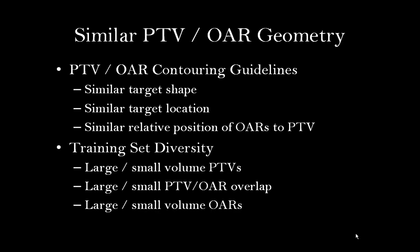In addition, patients included in the training set should be representative of all types of geometry that the model will be used for. For example, the training set should include patients that span all PTV volumes, all organ at risk volumes, and different overlap volumes between the PTV and organ at risk. This diversity is important to create a robust model that will produce acceptable results for patients with different types of geometry. If the model is used on a patient's geometry that exceeds the model geometry, the estimated DVH results will produce poor quality plans.